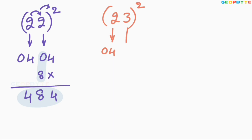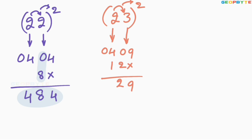Similarly, let us take the 23 square. 2 square is 04, 3 square is 09. 2 into 3 is 6, 6 into 2 is 12. Leave the first space, write 12 here. Add: 9, 2 plus 4 plus 1 is 5. Therefore, 23 whole square is equal to 529.